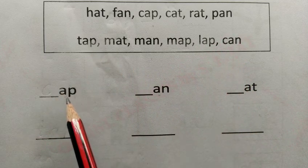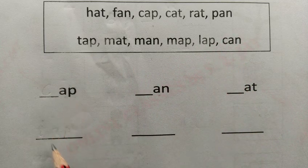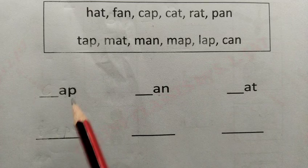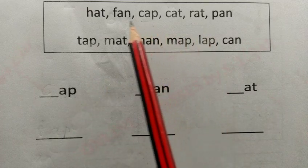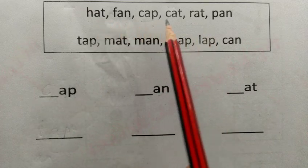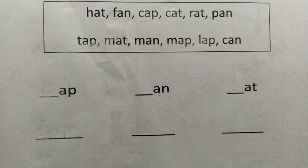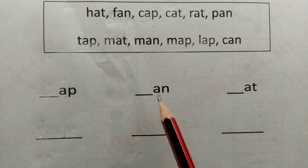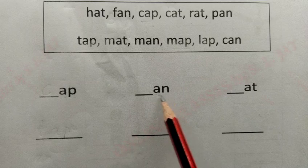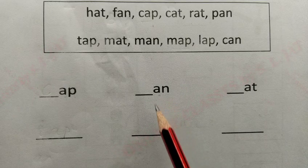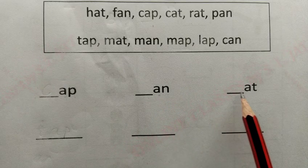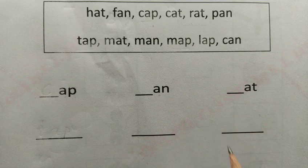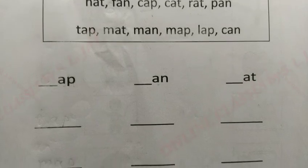अब इन्हें हमें अलग-अलग endings के अनुसार लिखना है। जिनके पीछे A-P लगा है उन्हें यहाँ लिखना है, पीछे A-N वाले यहाँ लिखने हैं, और पीछे A-T वाले हमें यहाँ लिखने हैं।